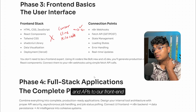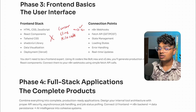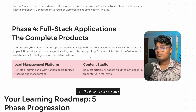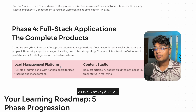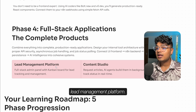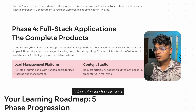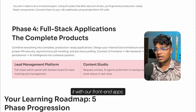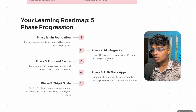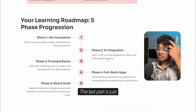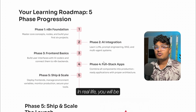After building the frontend, we'll connect n8n — using webhooks and APIs — to our frontend so we can build full-stack applications. Some examples include a lead management platform. We'll be making workflows and connecting them with our frontend apps.